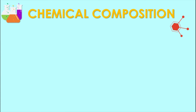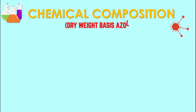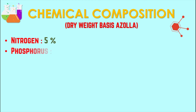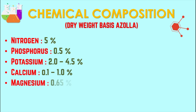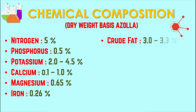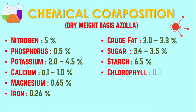This fixed nitrogen becomes available for the paddy crop. Regarding the chemical nature of Azolla on a dry weight basis, it contains various components, with nitrogen being the most prominent at about five percent.